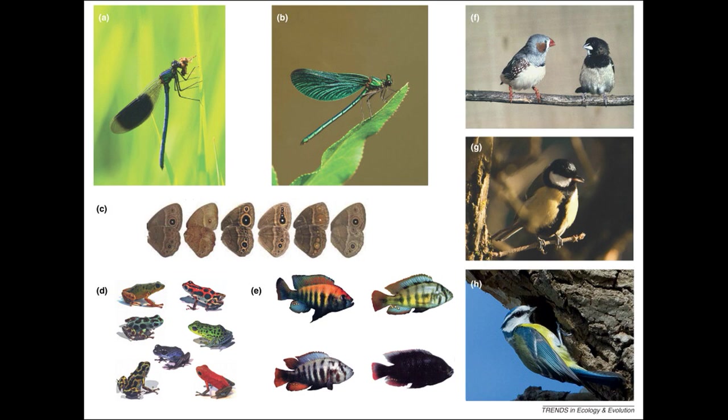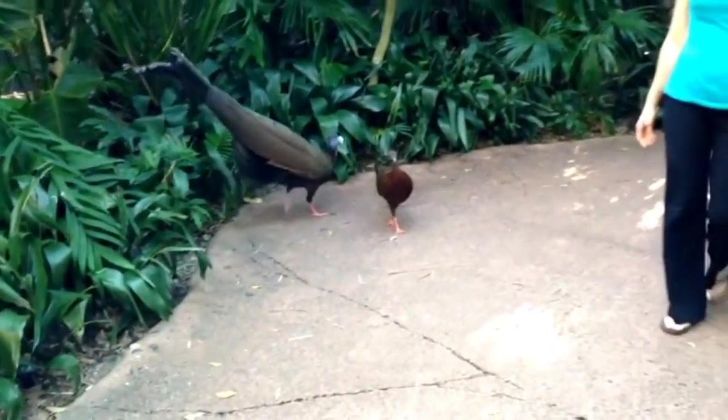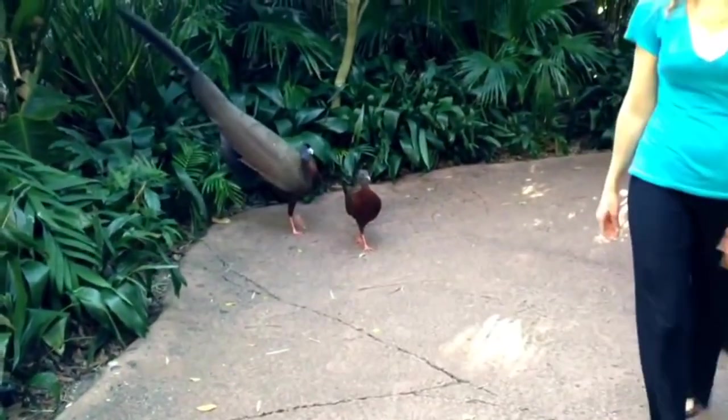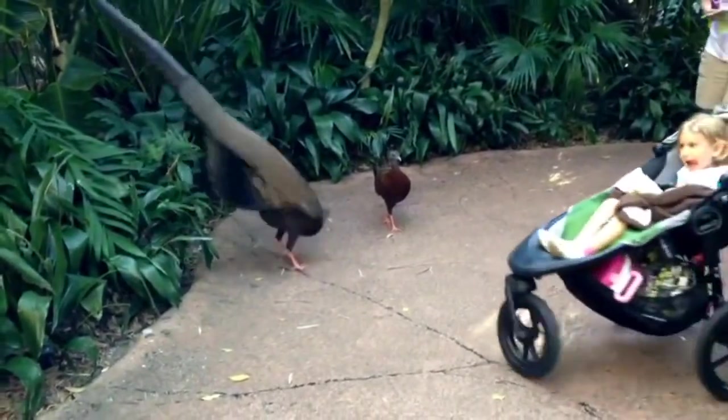Later in 1871, Darwin published Descent of Man, and this included a new mechanism of evolution known as sexual selection. Under Darwinism, variations in offspring were produced by an unknown process, but these variations were shaped by both selective processes to differing degrees, gradually resulting in the formation of new species. Ironically, some have commented that Wallace was more Darwinian than Darwin himself was.